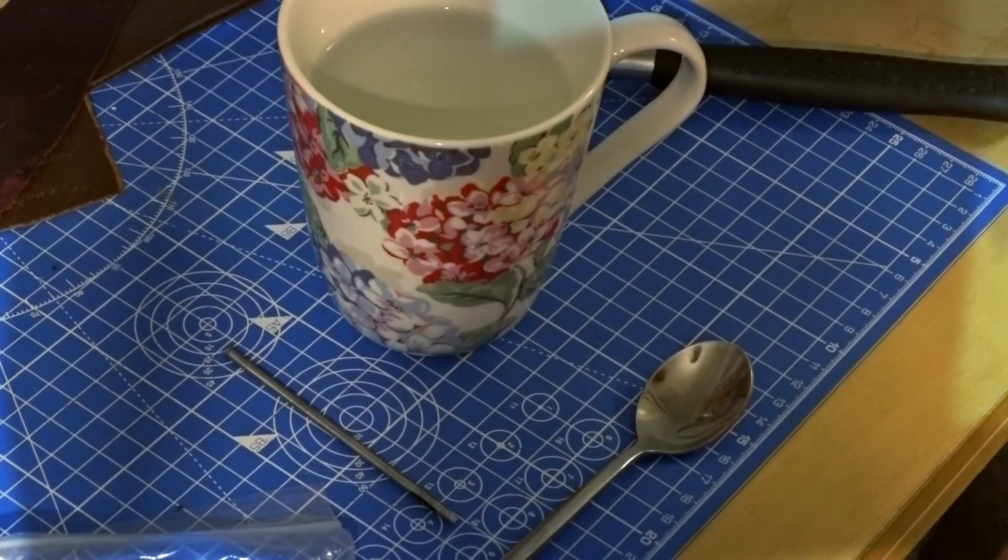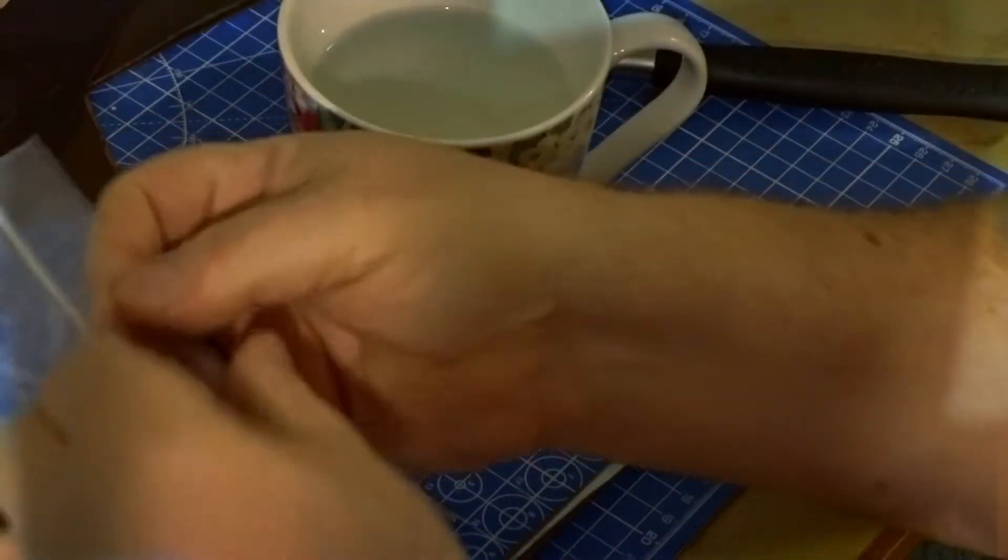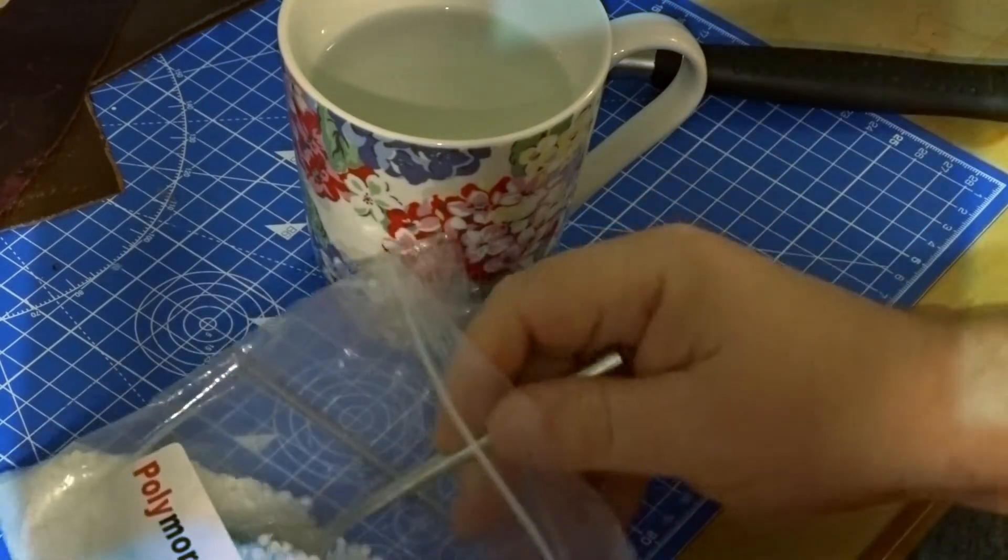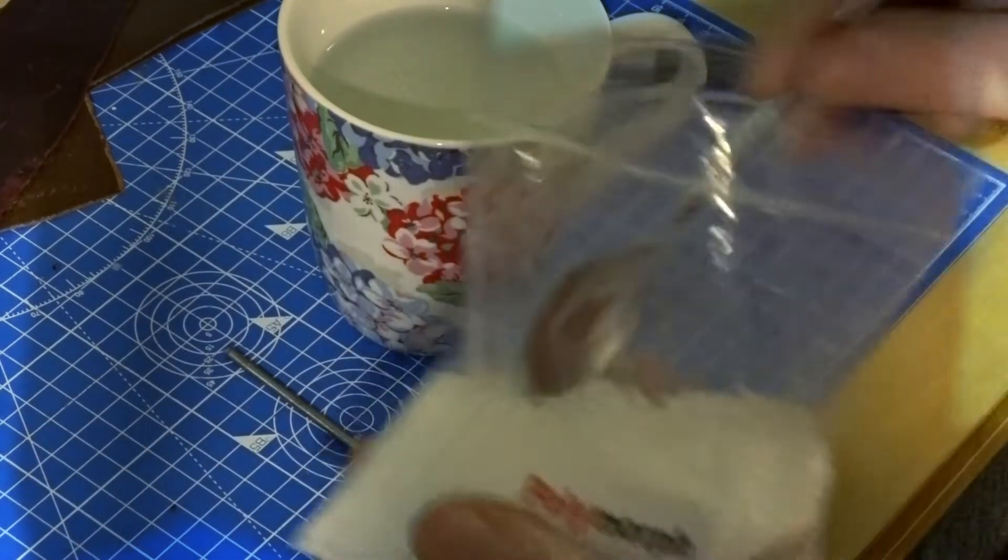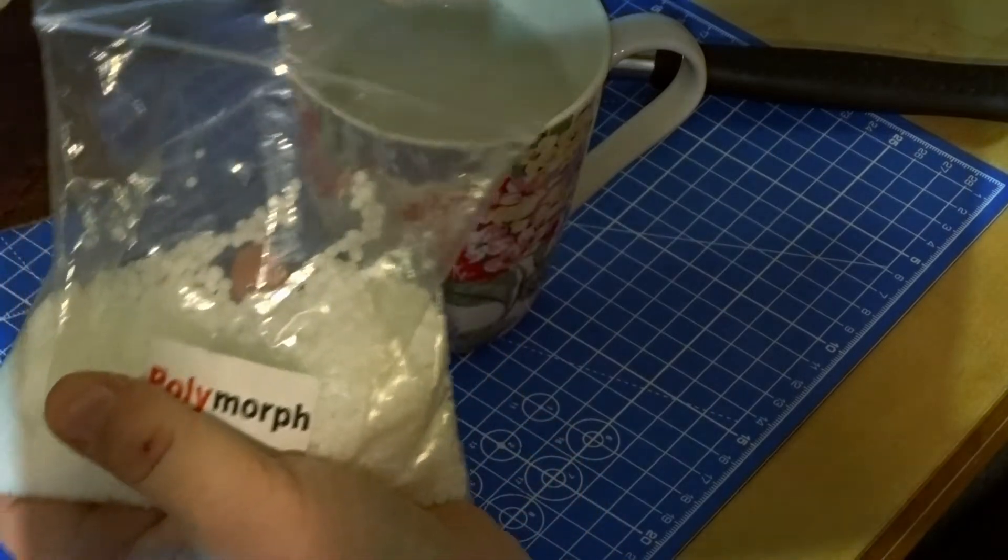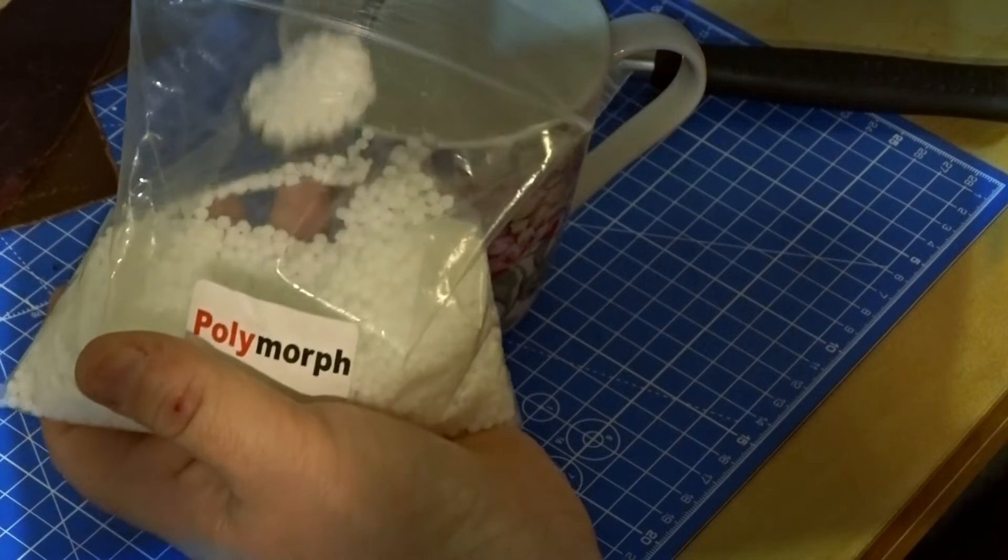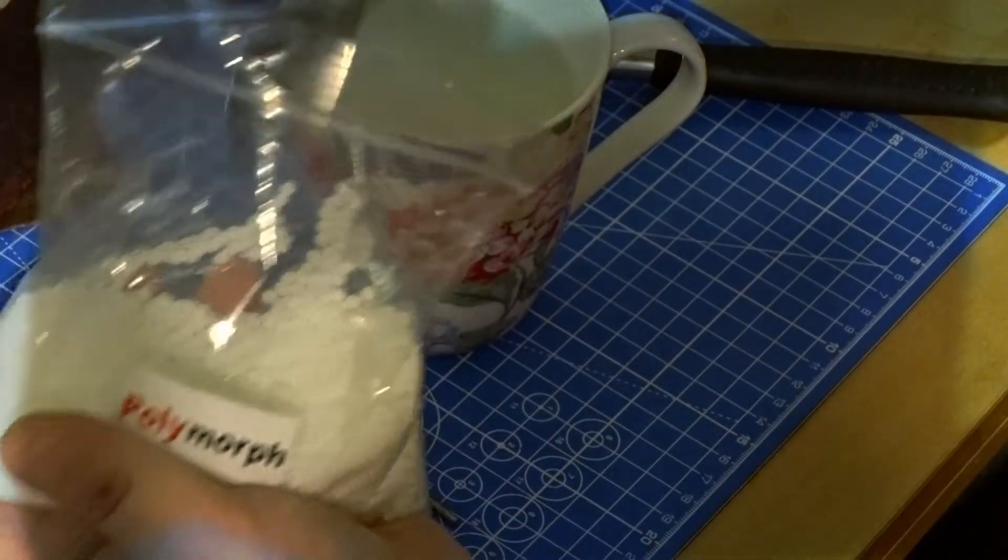So next comes the polymorph. It comes in a pellet form you see in the back there. I basically take three or four teaspoons and add it to a cup of boiling water or close to boiling water, just water straight out of the kettle. It does go a lot further than you think, so you'll see I've got four heaped teaspoons in there.